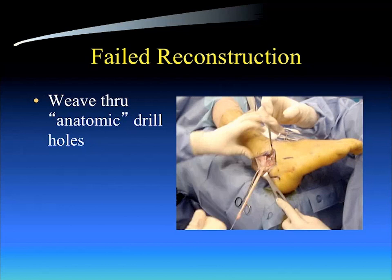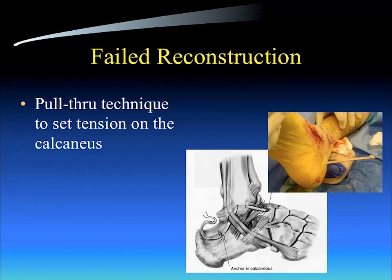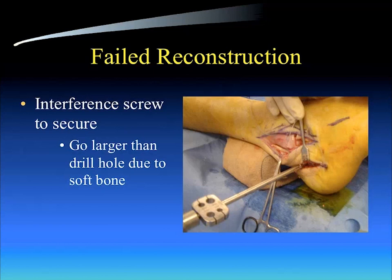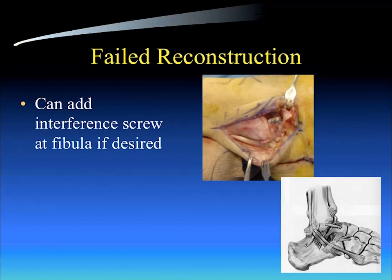You'll see we've already set our allograft into the talus. Now we're placing it through a drill hole in the fibula, then drilling a hole through the calcaneus and delivering the graft out the medial aspect. This pull-through technique allows us to set tension on the tendon weave procedure prior to placing our interference screws. Once we have the tension right — not over-tensioned, in a neutral position, not maximum eversion — we place an interference screw to secure the tendon into the calcaneus, usually a larger screw than what we drilled due to the soft cancellous bone. You can also add an interference screw at the anterior aspect of the fibula.